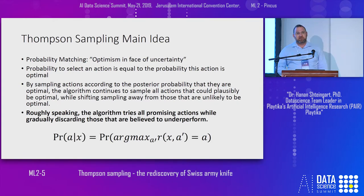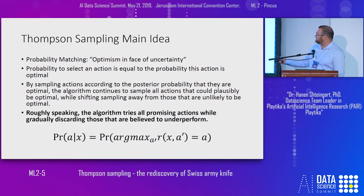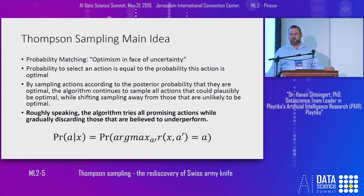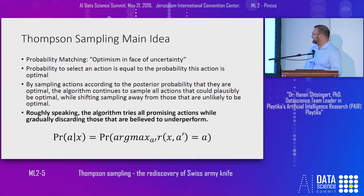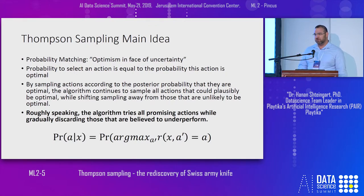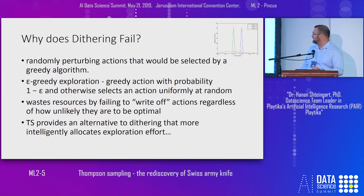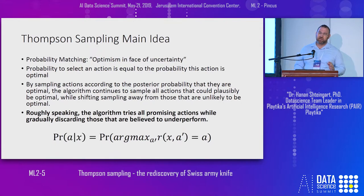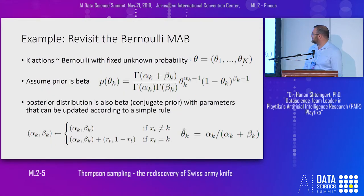Thompson Sampling does it much better because it does something very intuitive — and even now people are not sure why it works so well. The intuition is: choose with probability the action which has the probability of being the best. If I have three possible actions, I will choose with 80% probability the action that is 80% likely to be the best. This directs exploration towards places where we believe it's beneficial — it makes no sense to explore an action we believe is really bad, which is what epsilon-greedy does.